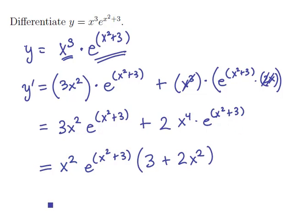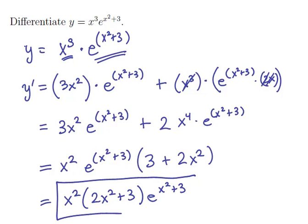And so this, x squared times the expression 2x squared plus 3 times e to the x squared plus 3. I'm just rearranging it to make it easier to read. That would be our final derivative.